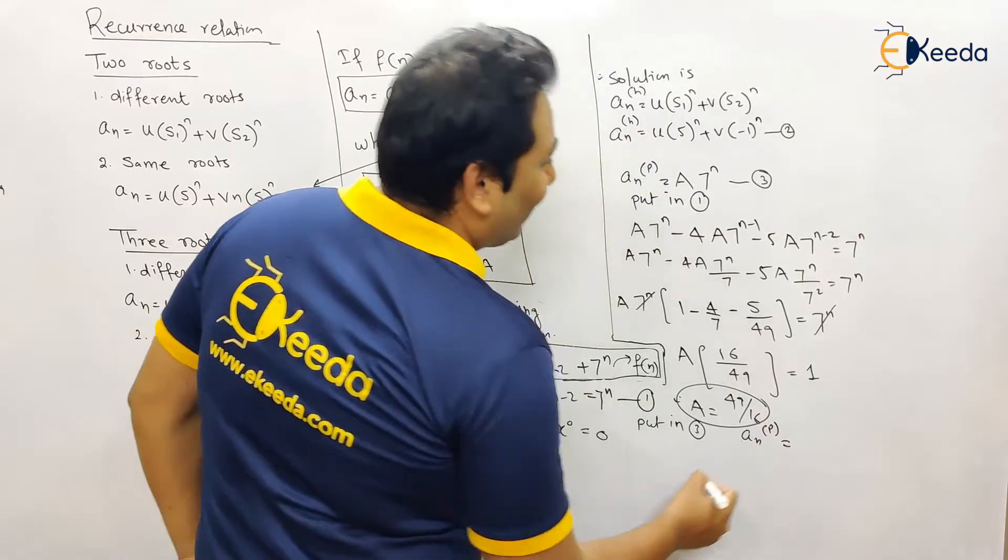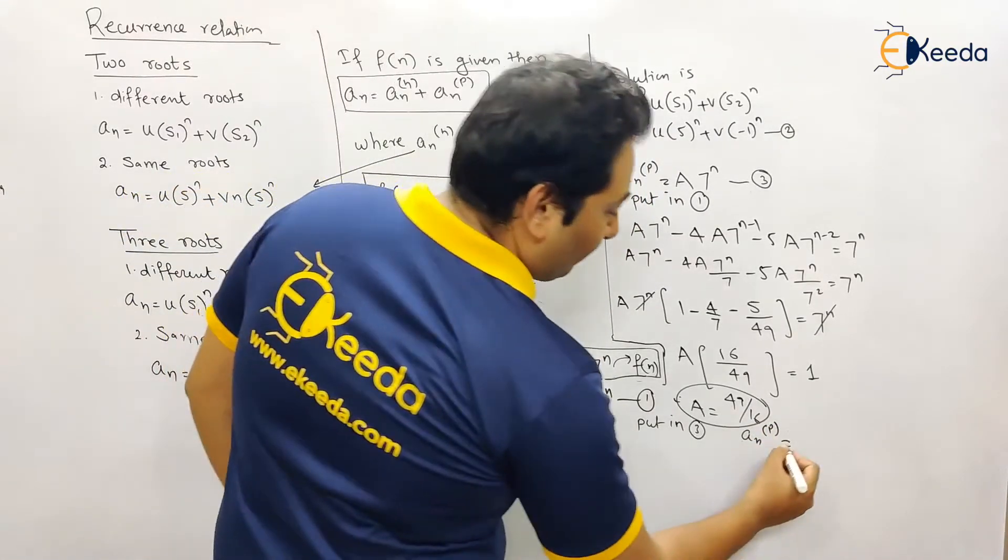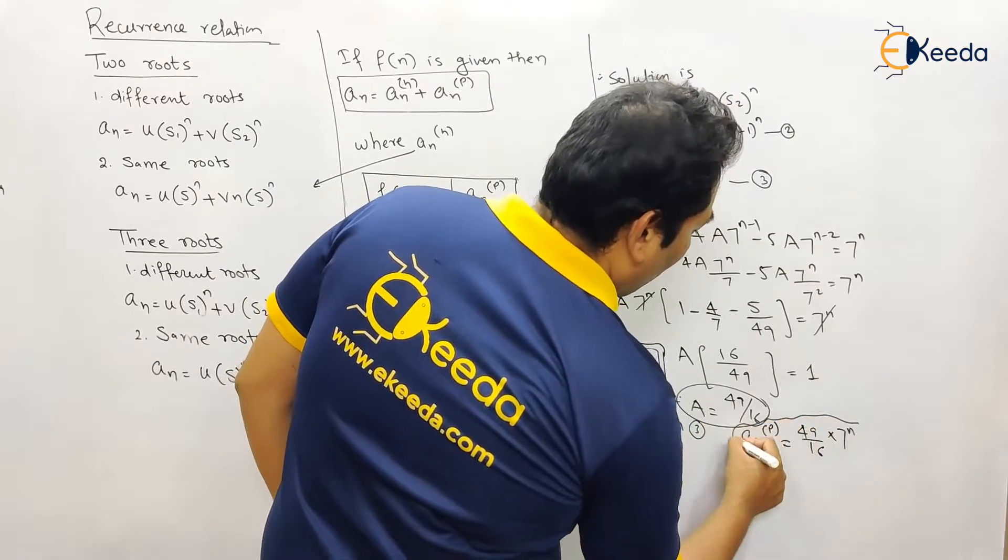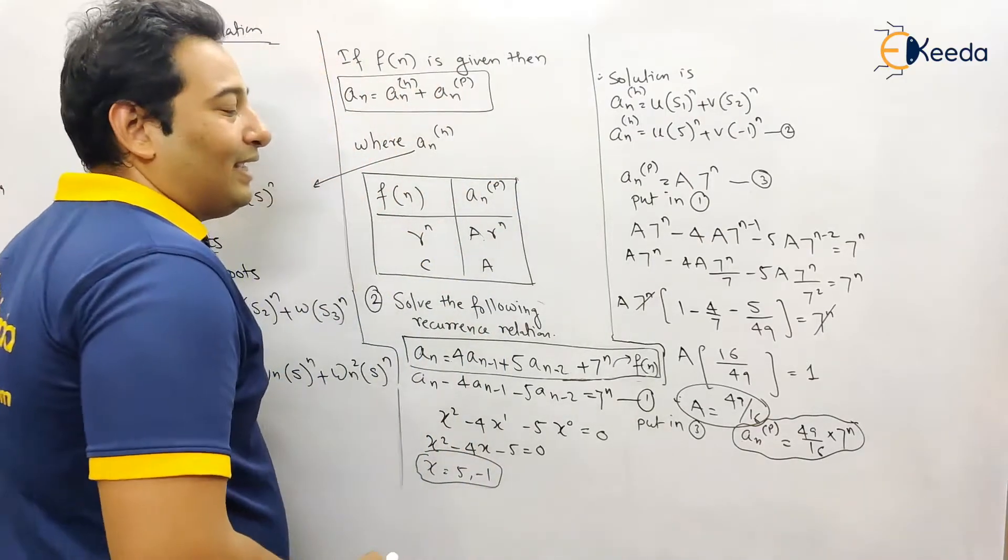If you do that, we'll get the value of a_np, that is 49 by 16 into seven raised to n. We got both a_np and a_nh.